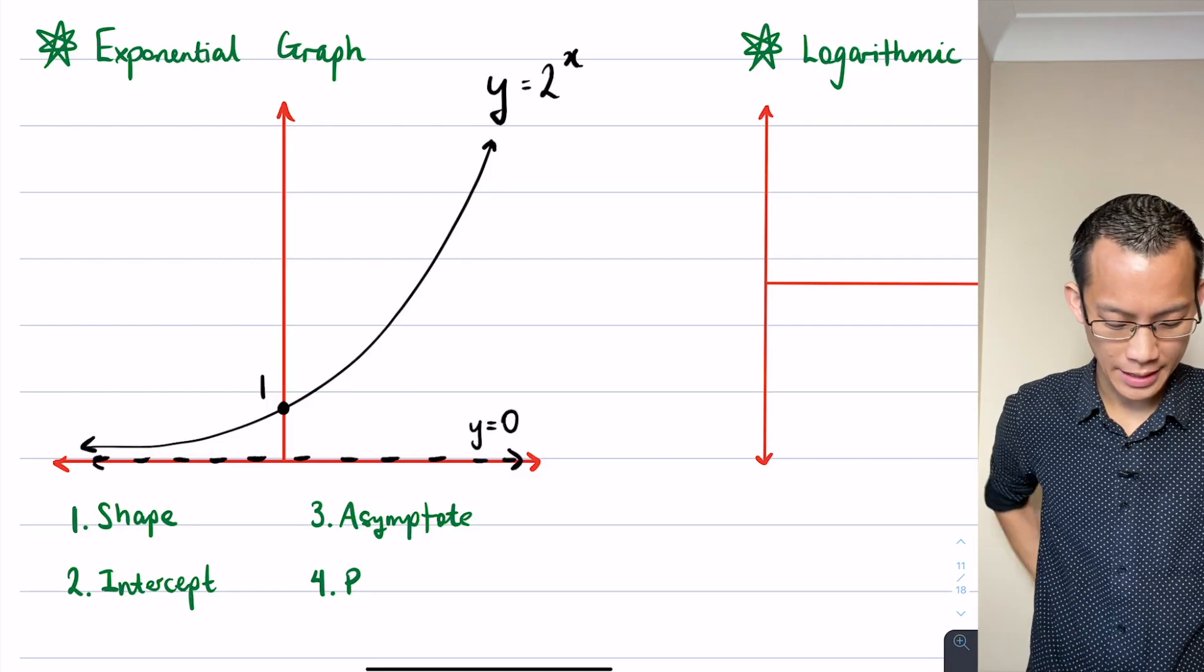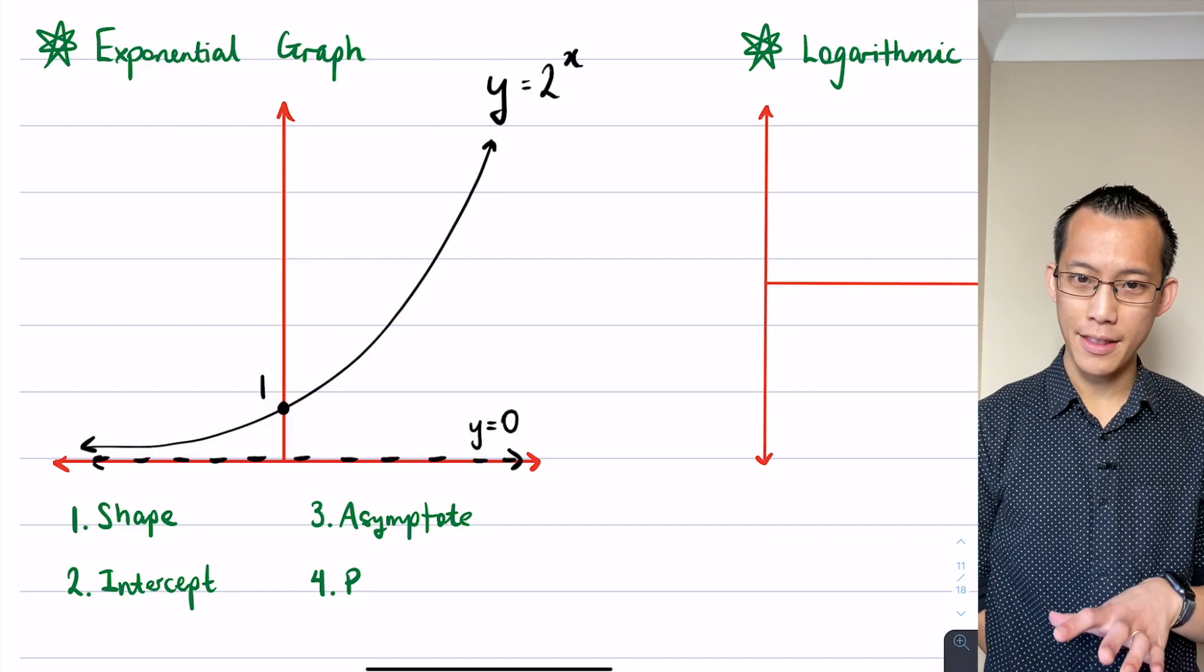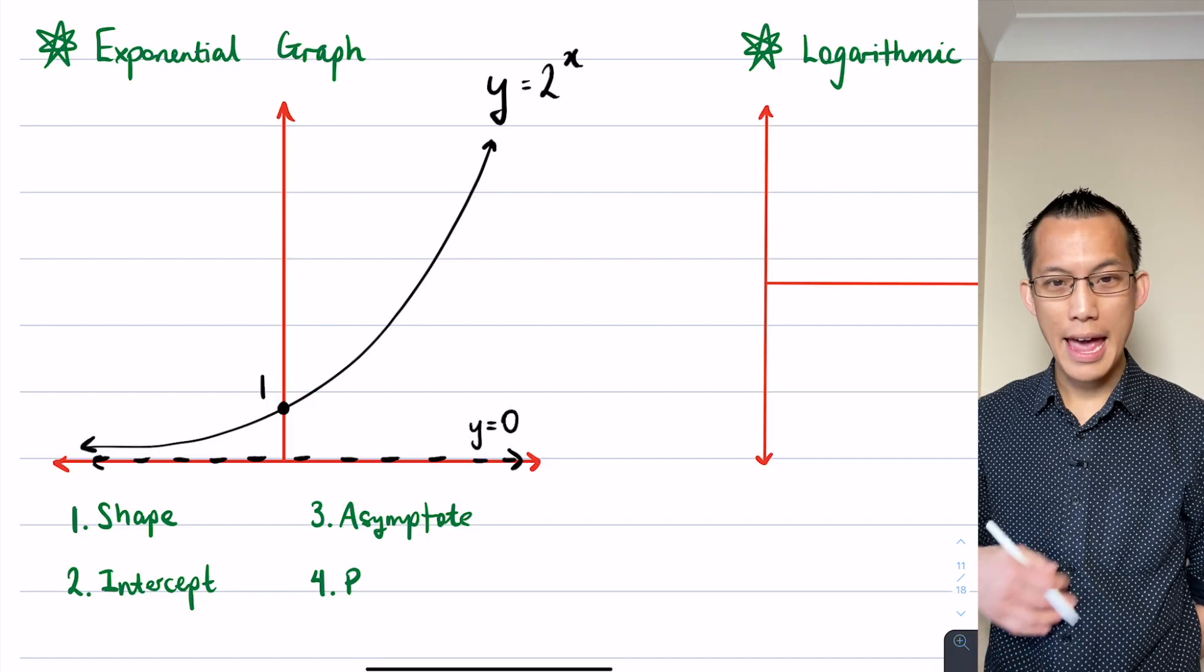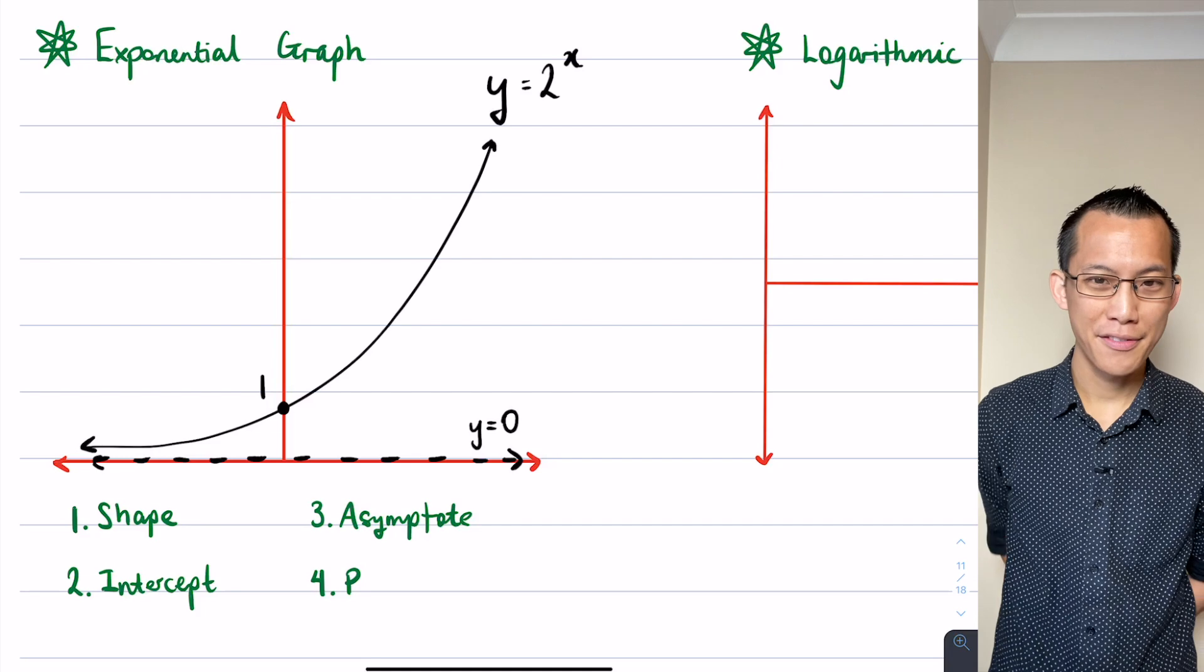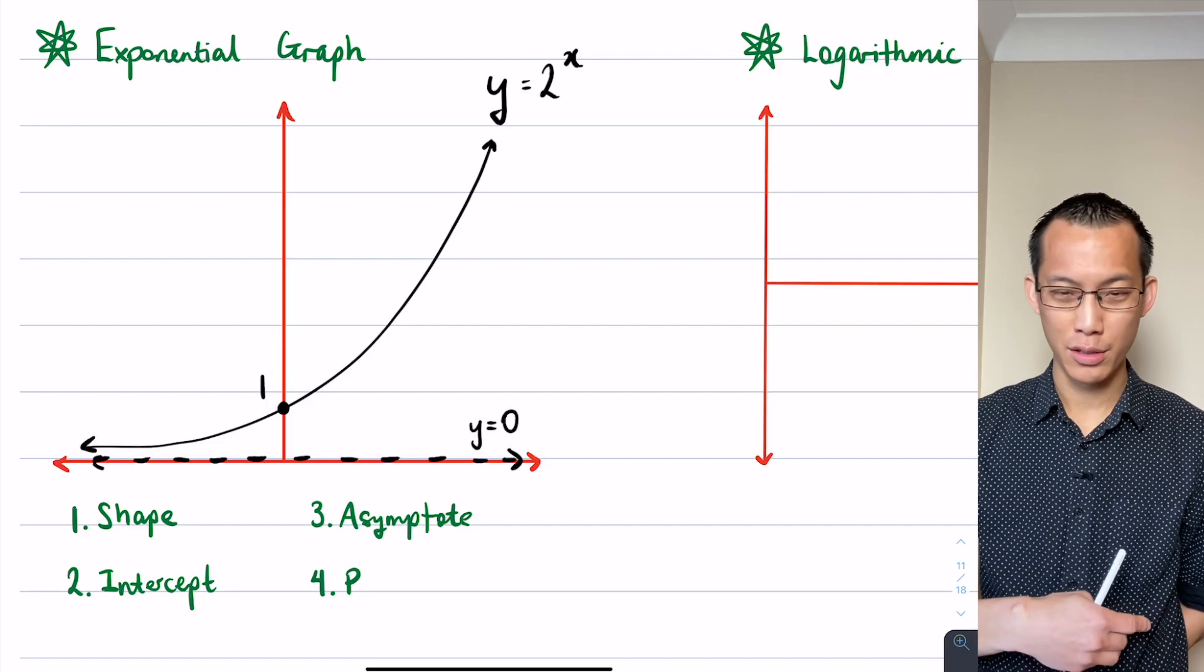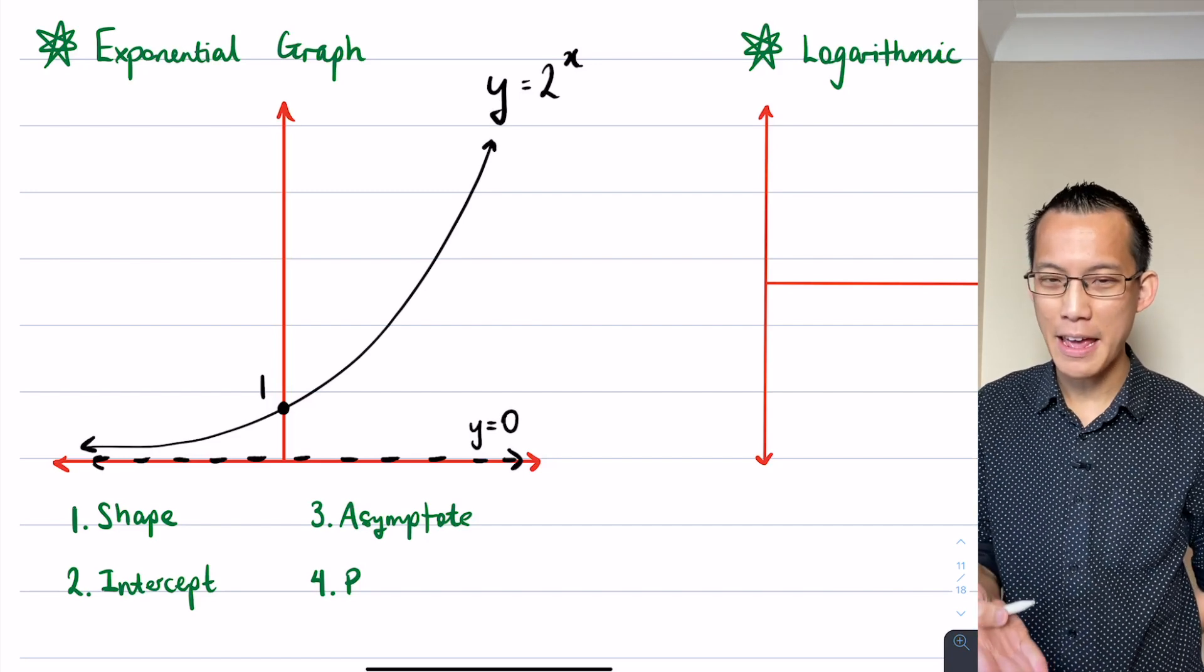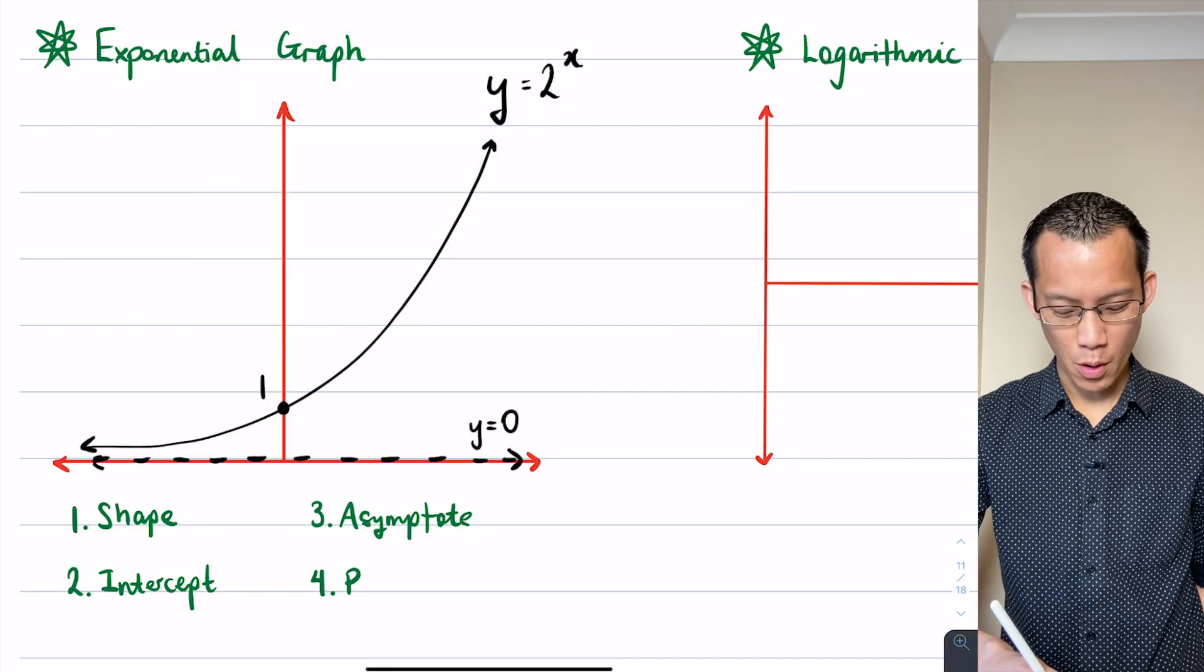So shape, intercept, asymptote - most people are pretty good at nailing down these three features. But there's one last feature. Every graph actually needs these if they're relevant. At the moment this exponential graph that we're looking at might not be y equals 2 to the x in its present form - it could be y equals 3 to the x or 8 to the x or 100 to the x. What I need is an additional piece of information to make sure it's unambiguous.